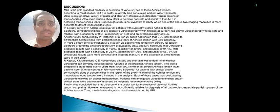MRI is the gold standard modality in detection of various types of tendo-Achilles tear according to most studies, but it's costly, relatively time consuming, and not widely available. USG is cost effective, widely available, and very efficacious for detecting lesions of tendo-Achilles tear. However, not enough studies are available to clarify which of the two imaging modalities is most accurate. Some studies conclude that ultrasound is a useful tool for evaluation but not sufficiently reliable for diagnosis of all pathology, especially partial rupture, and that definitive diagnosis must be established by MRI.